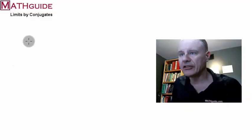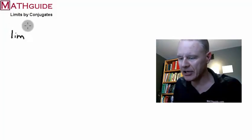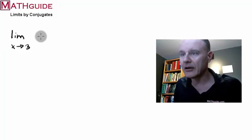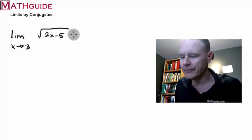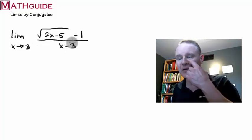What I'd like to do is to put a problem up here that requires this technique of limits by conjugate technique that I'm referring to. So let's say we had a problem that said we're going to find the limit as x approaches 3. And here in the numerator of a rational expression, we have the 2x minus 5 on a radical. And then we've got a minus 1. Bad looking fraction. But we've got a minus 3 down here. So let's say we have this problem.